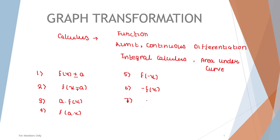Then we will move to what happens when we substitute x as minus x, and what happens when we multiply f(x) by minus 1 — the transformation for minus f(x). The second last will be what happens when we substitute x as |x|, and at last we will see what happens when we take the absolute value of the whole function. So one by one, we will be dealing with every transformation using different functions.